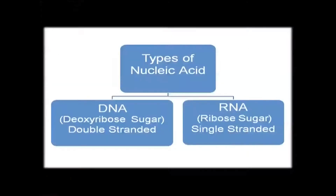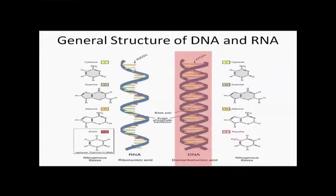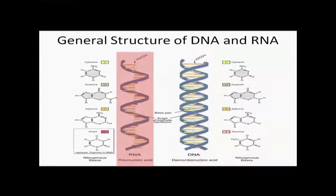In case of DNA, the sugar is deoxyribose, and in case of RNA, the sugar is ribose. This is the general structure of DNA and RNA. DNA is double helical, double-stranded structure, but RNA is single-stranded structure.